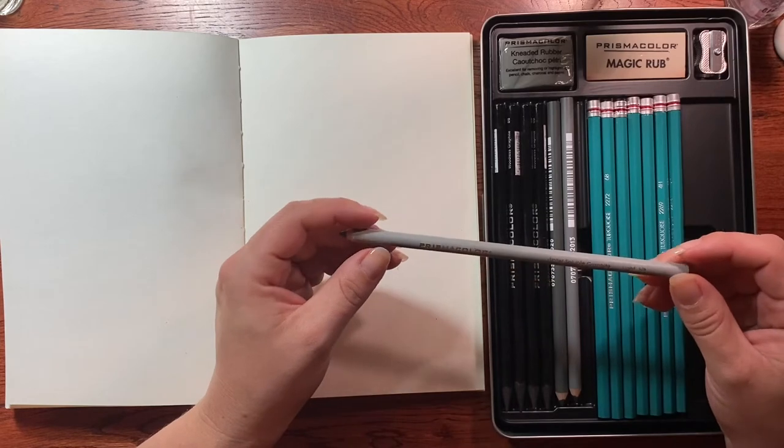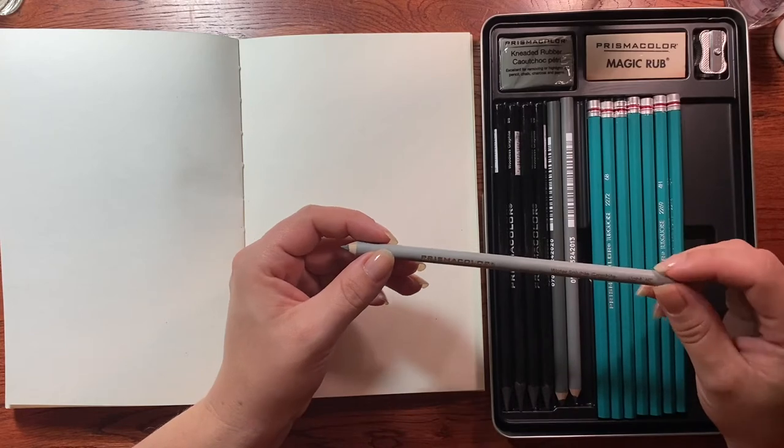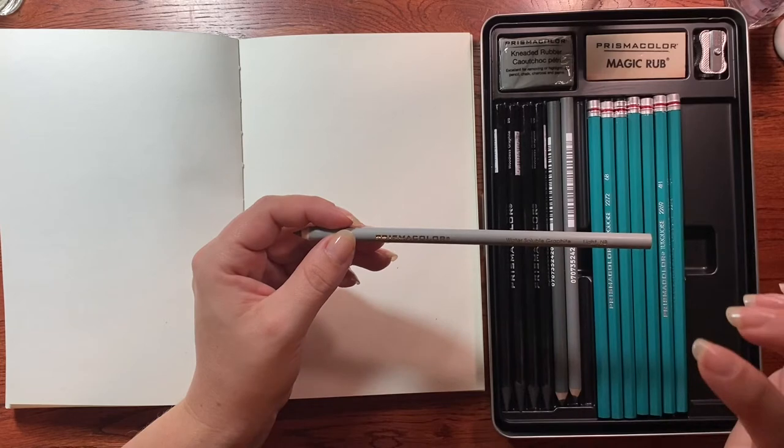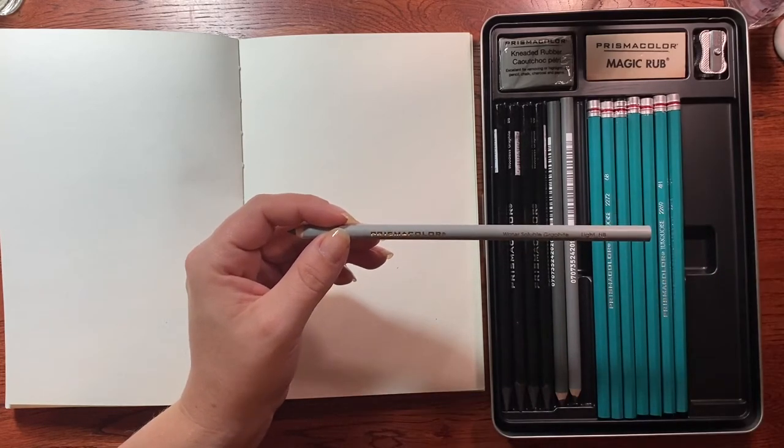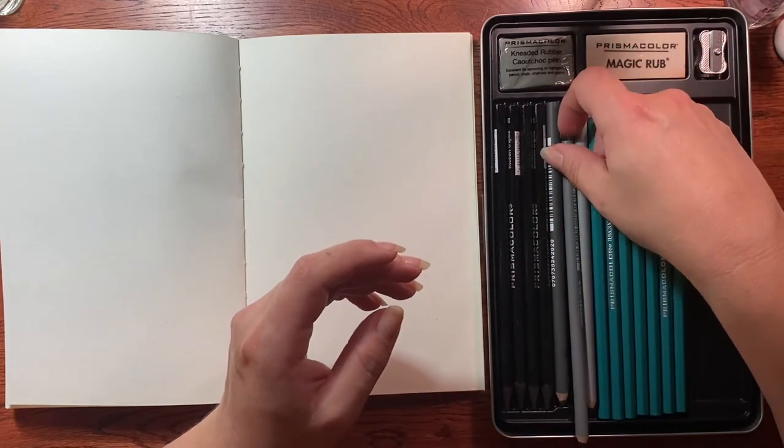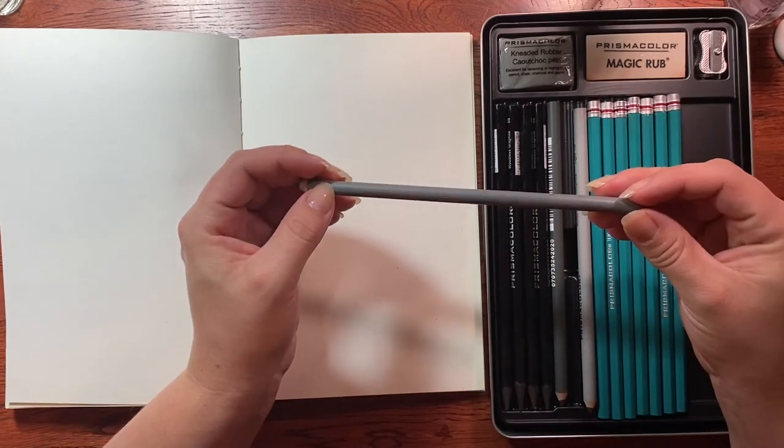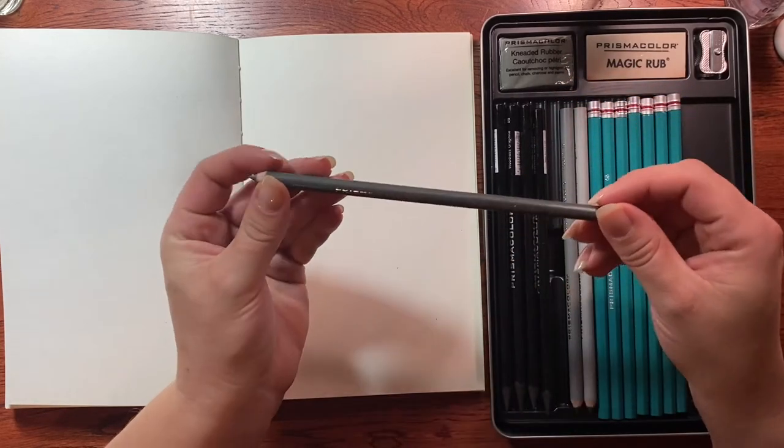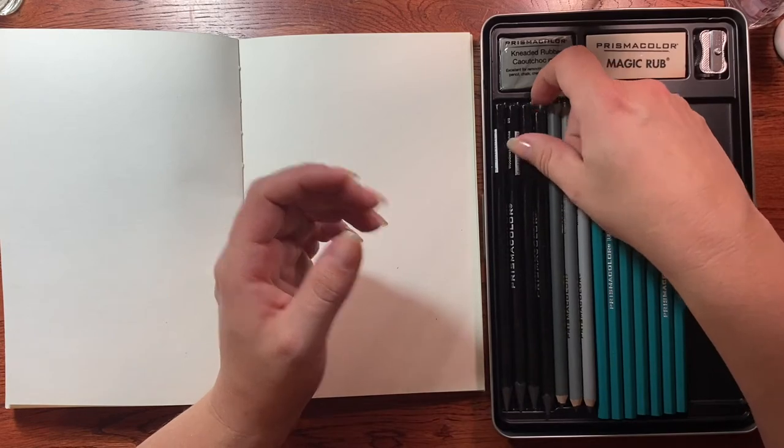Okay. This is water soluble graphite. This is supposed to be able to, you put it on the paper and dilute it with water and it's supposed to mimic like watercolor almost. But this is a light HB and a medium 4B, dark 8B.